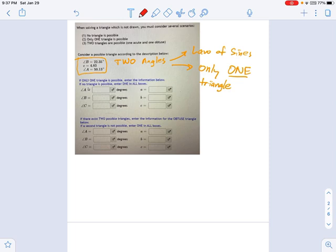I'm given two angles. How do I find the third angle? Angle C is just going to be 180 degrees minus angle A minus angle B. So for this one, what is that? Calculator says 107.5 degrees. Okay, so you would just put that in there.